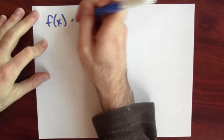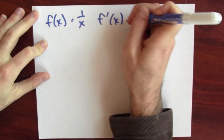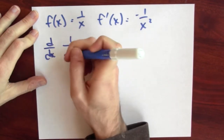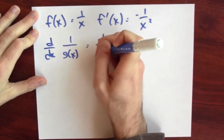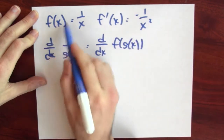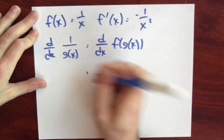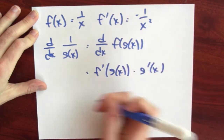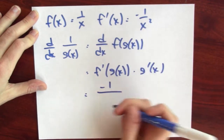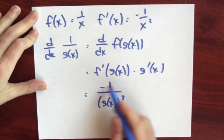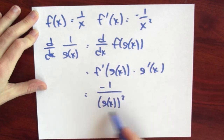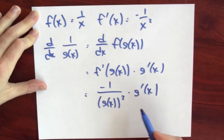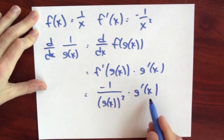Let me make up a new function. Let's call f of x that function 1 over x, so then f prime of x is minus 1 over x squared — the derivative we just calculated. Now if I want to calculate the derivative of 1 over g of x, that's the same as the derivative of f of g of x, since I defined f to be the 1-over function. By the chain rule, the derivative of this composition is the derivative of the outside at the inside, times the derivative of the inside. The derivative of f is minus 1 over its input squared, so f prime of g of x is minus 1 over g of x squared, times g prime of x.